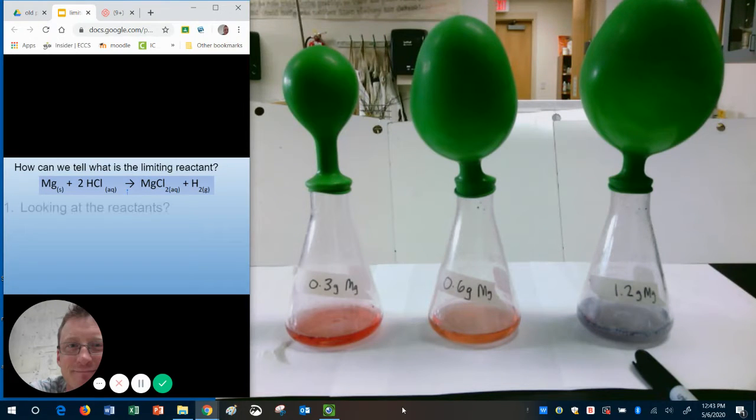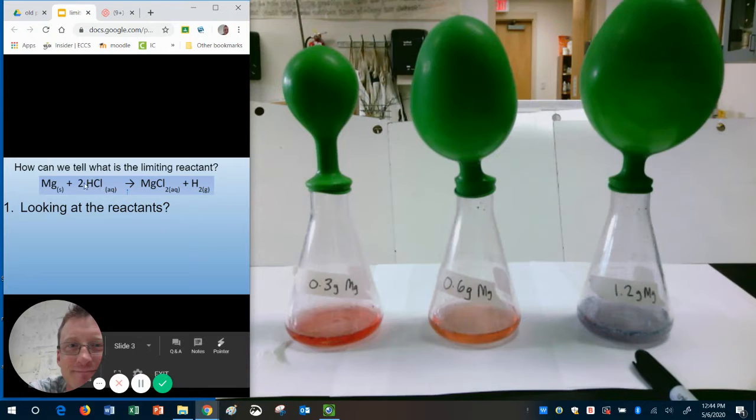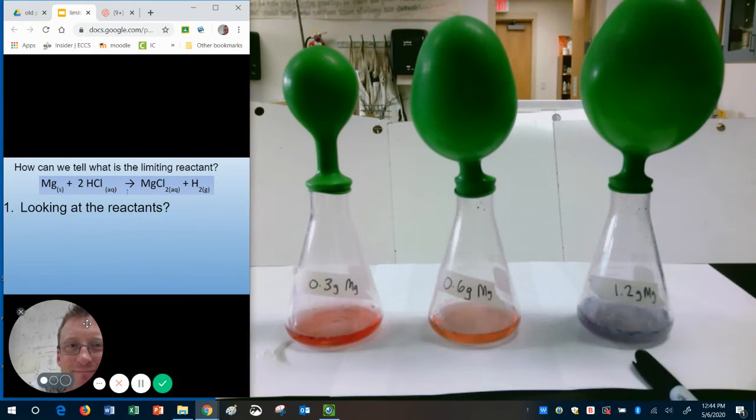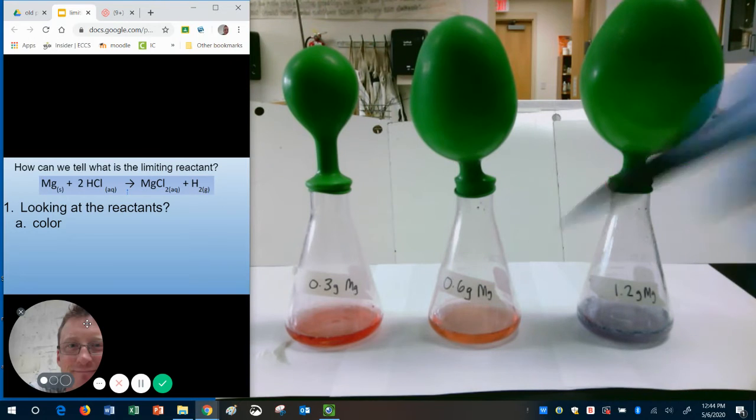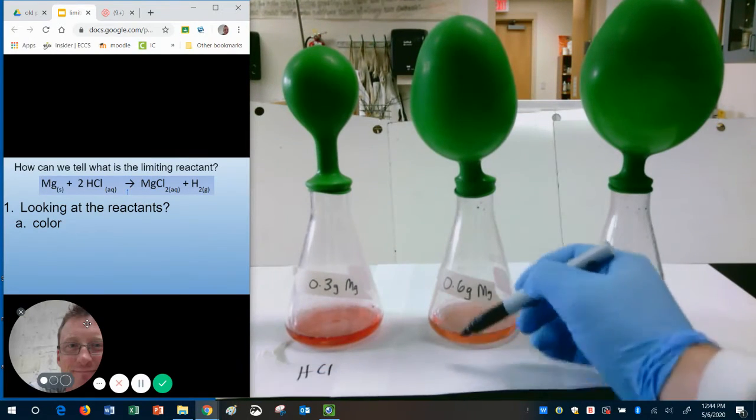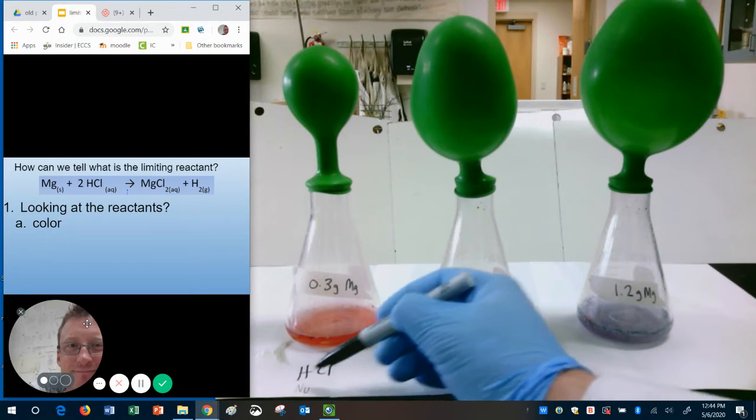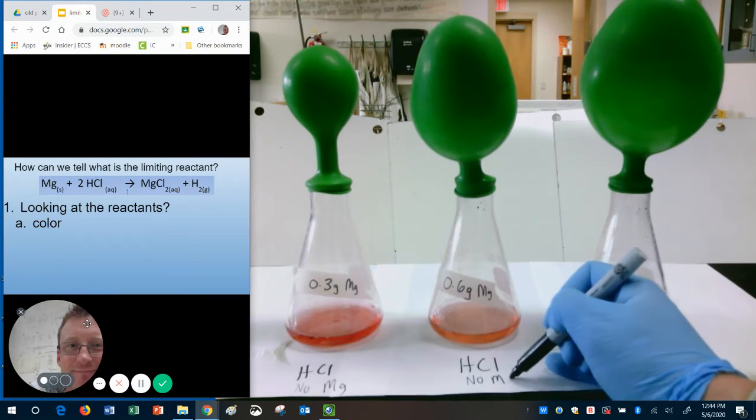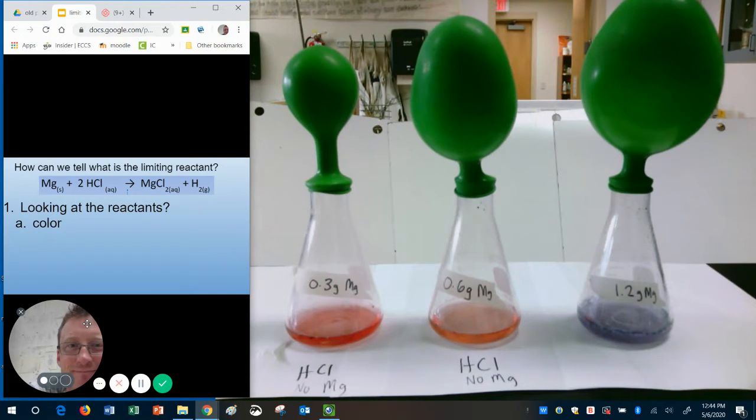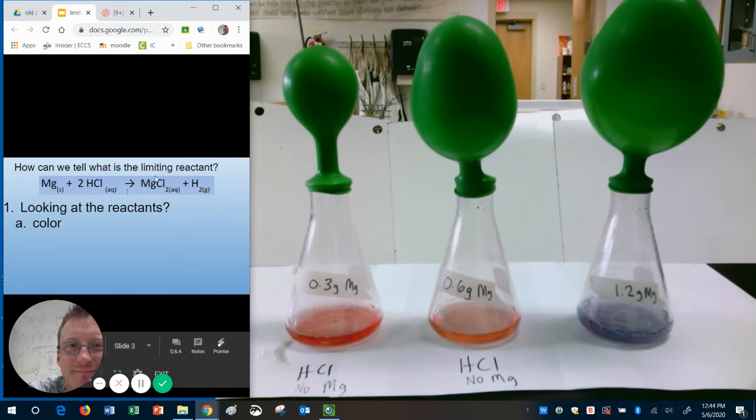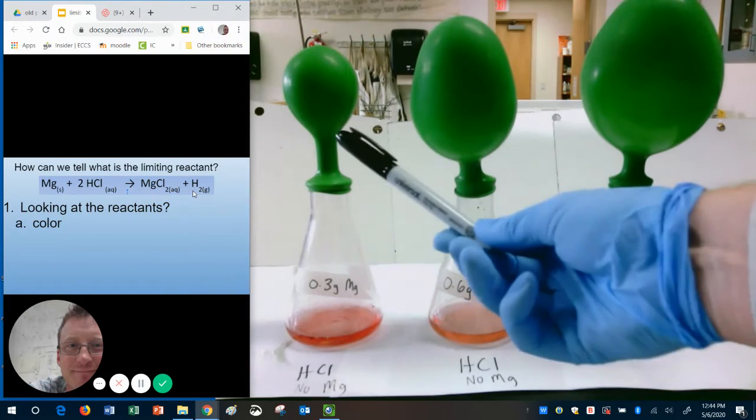How can we tell what is the limiting reactant? When we look at the reactant side, if there is HCl left over in our containers, it should be pink. So which ones have HCl? The first one must have HCl in it, and the second one must also have HCl in it. What must have run out? There must no longer be any magnesium powder in either of those. Why? Because they turned into their products. We created magnesium chloride, which is colorless, and we created hydrogen gas. That's why the balloons inflated.